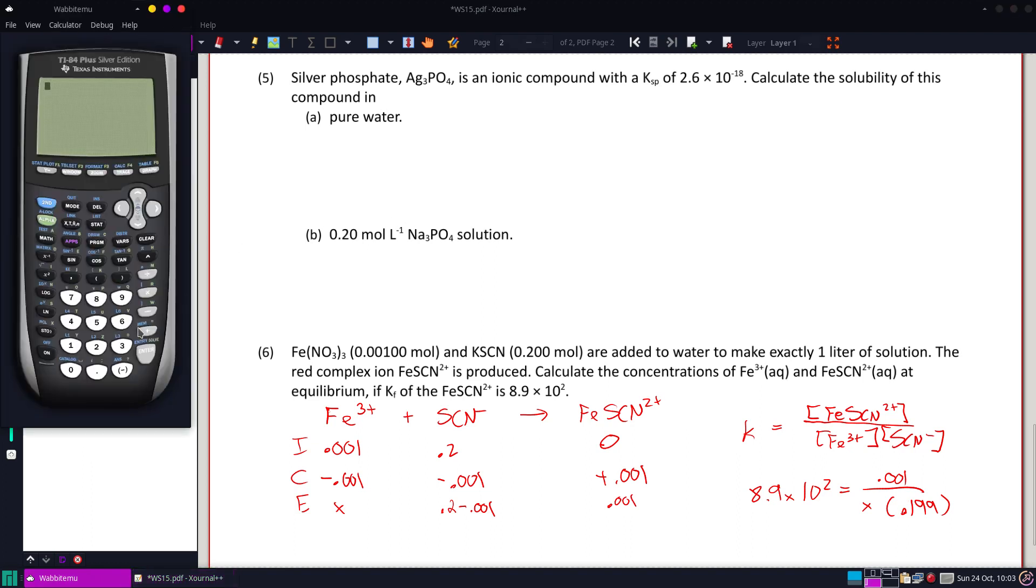We'll see what the calculator actually gives us. You can tell us if our approximation is accurate enough. So, 8.9 times 10 to the second, times 0.199, and divided by 0.001, gives us 1 over our X, so our actual X is 5.6 times 10 to the negative sixth.